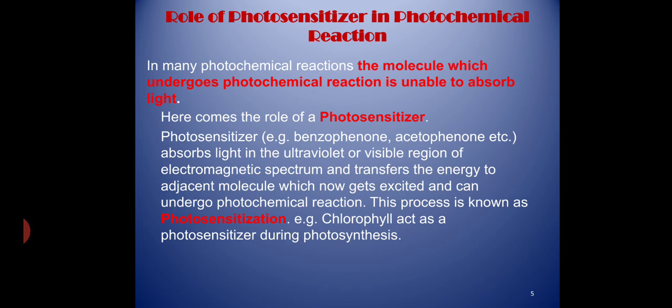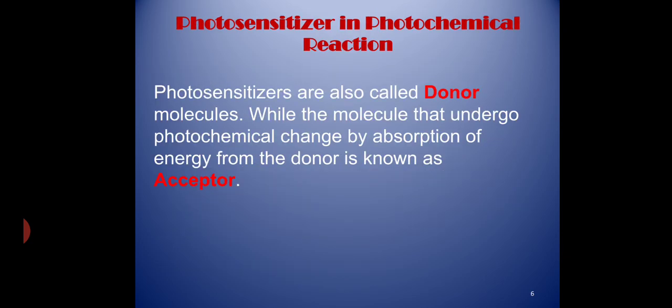Examples of photosensitizers include benzophenone, acetophenone, etc. This process is known as photosensitization. One common example of a photosensitized reaction is the formation of food in plants from carbon dioxide and water in the presence of sunlight and chlorophyll, where chlorophyll acts as a photosensitizer. Photosensitizers are also called donor molecules, and the molecule which actually undergoes the photochemical reaction by absorption of energy from the donor molecule is called the acceptor molecule.